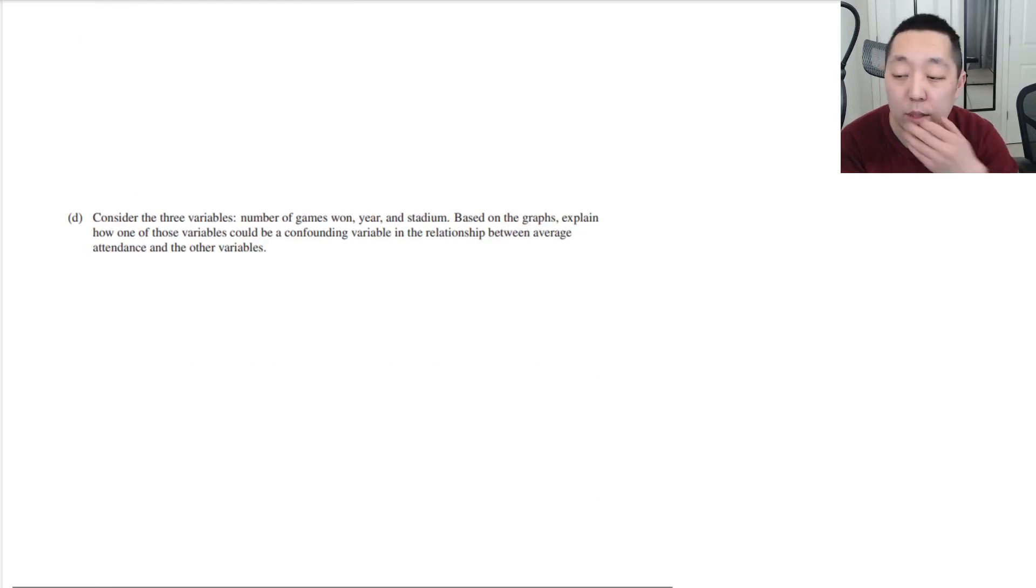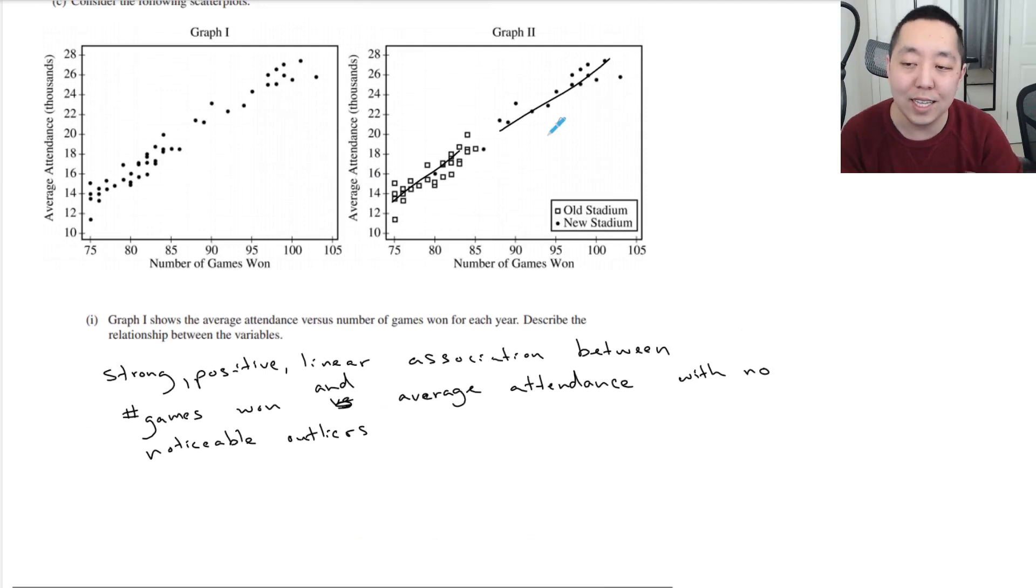Okay, consider the three variables: number of games won, year, and stadium. Based on the graphs, explain how one of those variables can be a confounding variable in the relationship between average attendance and other variables. So one of the things you should keep in mind is based on this data, you know, before we were kind of saying the newer stadium is drawing more people, but also what's happening is you're winning more games in the new stadium. So that could be confounding it. It may not be the newness of the stadium, it could be the fact that they're just winning more games and that's why attendance is up.